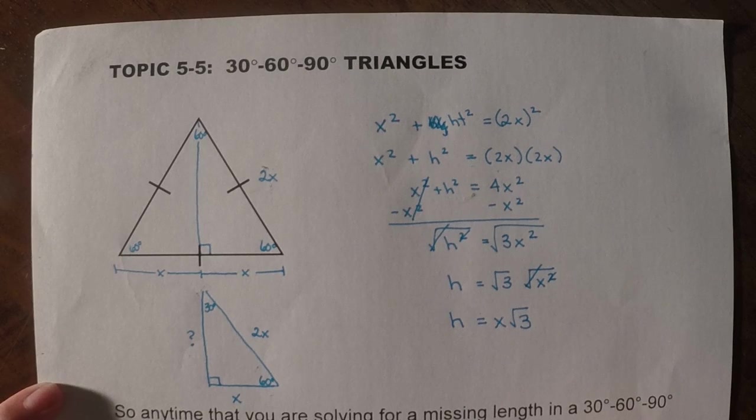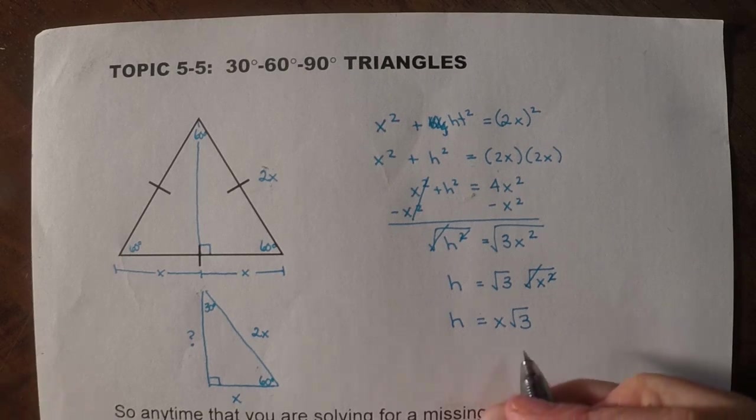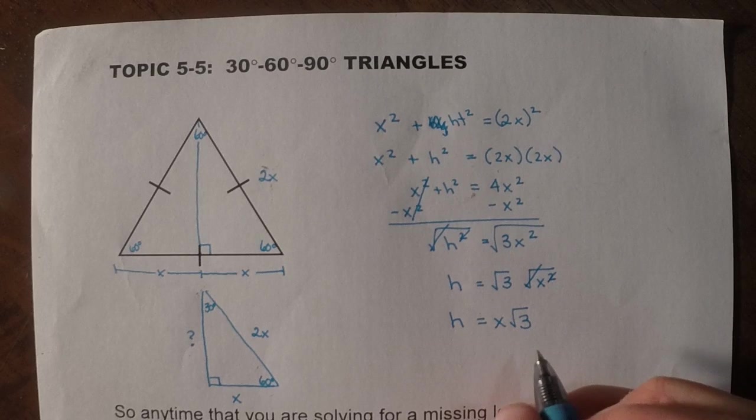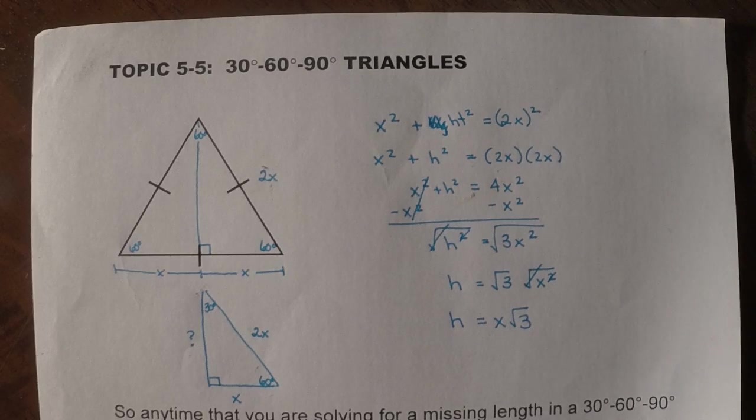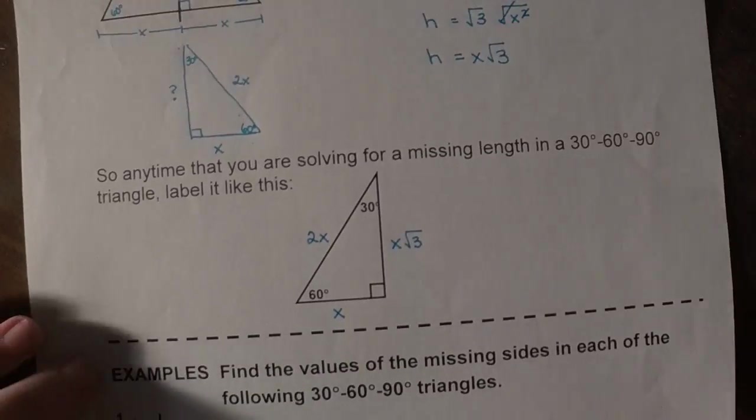So again, it's not imperative that you understand where this came from, but it is neat to see where it does come from. So the height will always be x root 3, the short leg is x, and the hypotenuse is 2x. That's where all of this formula comes from. So you can label it down here on this triangle.